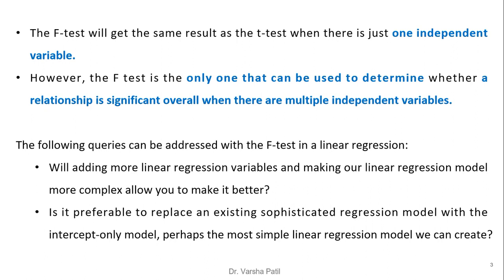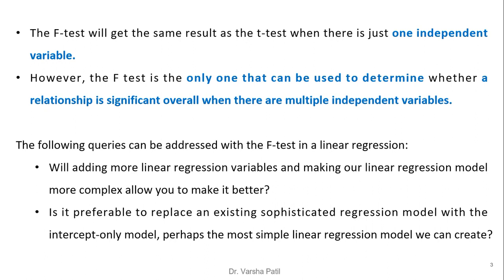The F-test is the only one that can determine whether a relationship is significant when there are multiple independent variables. The following queries can be addressed with the F-test in linear regression: will adding more variables and making the model more complex make it better? We can decide whether the number of independent variables is significant in the regression model. It is preferable to replace a sophisticated model with an intercept-only model if the independent variables are not significant or relevant to the dependent variable.